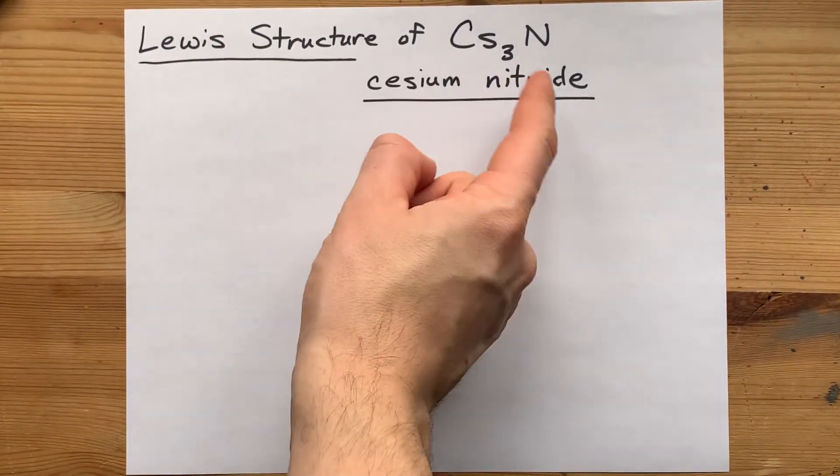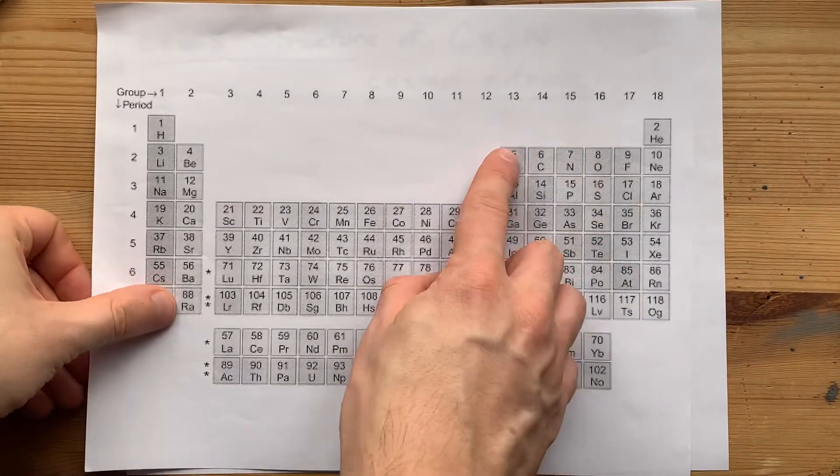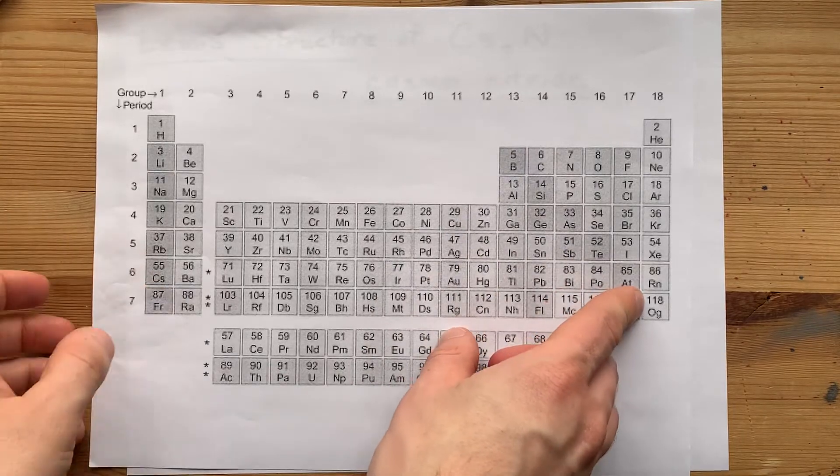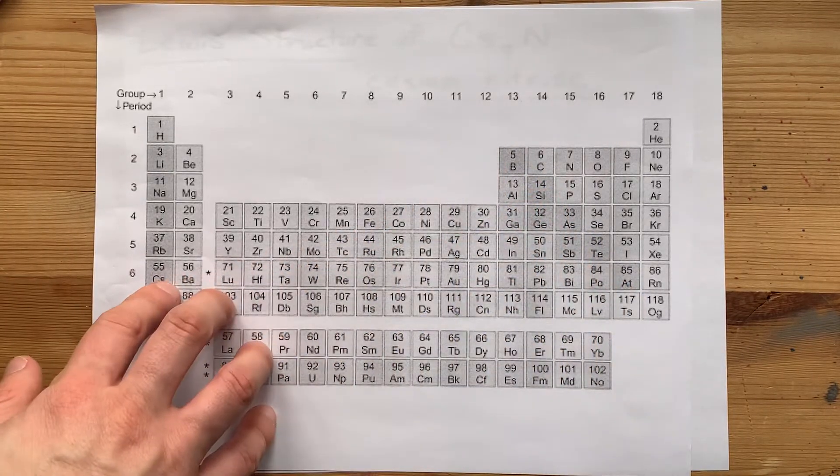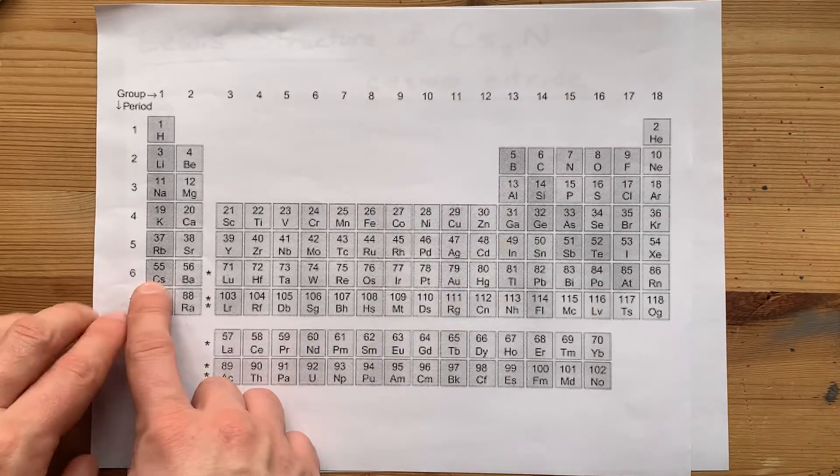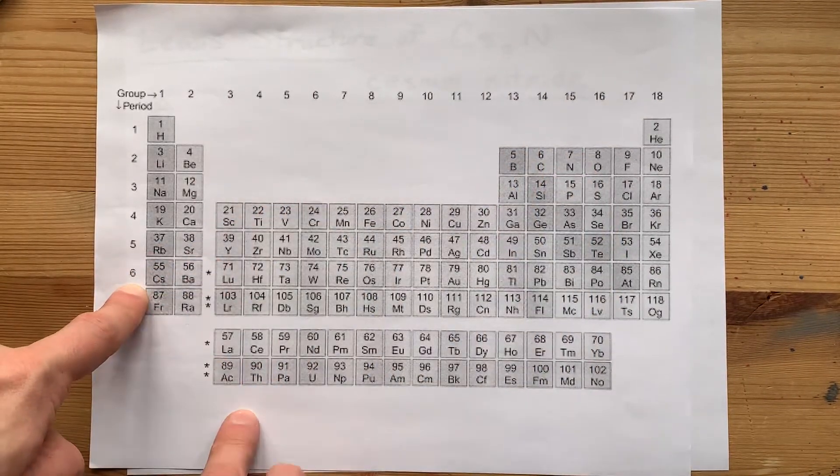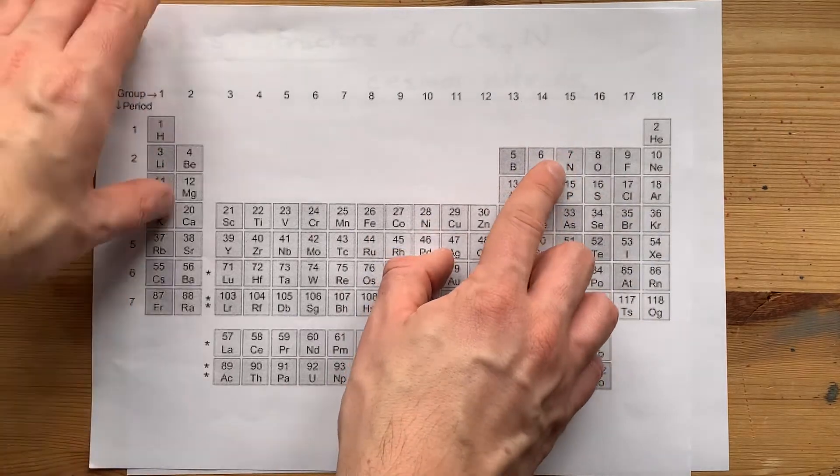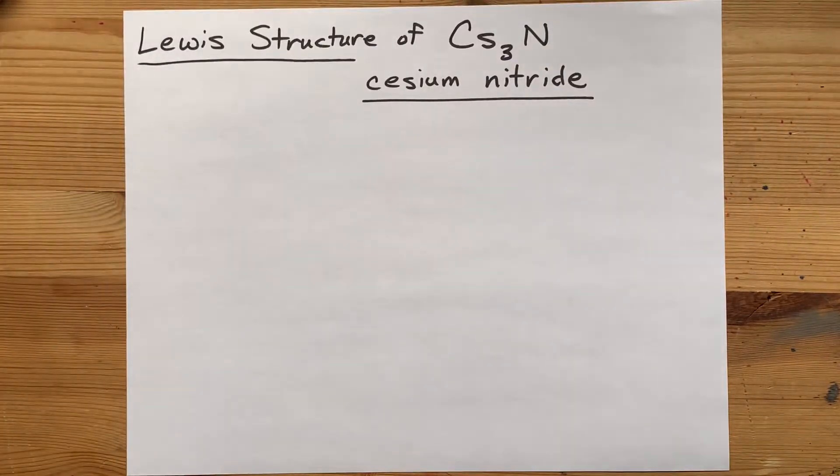Lewis structure for cesium nitride. This staircase on most periodic tables separates the metals from the non-metals. Cesium is a metal from the far left of the periodic table, and nitrogen is a non-metal from the right-hand side of the periodic table.